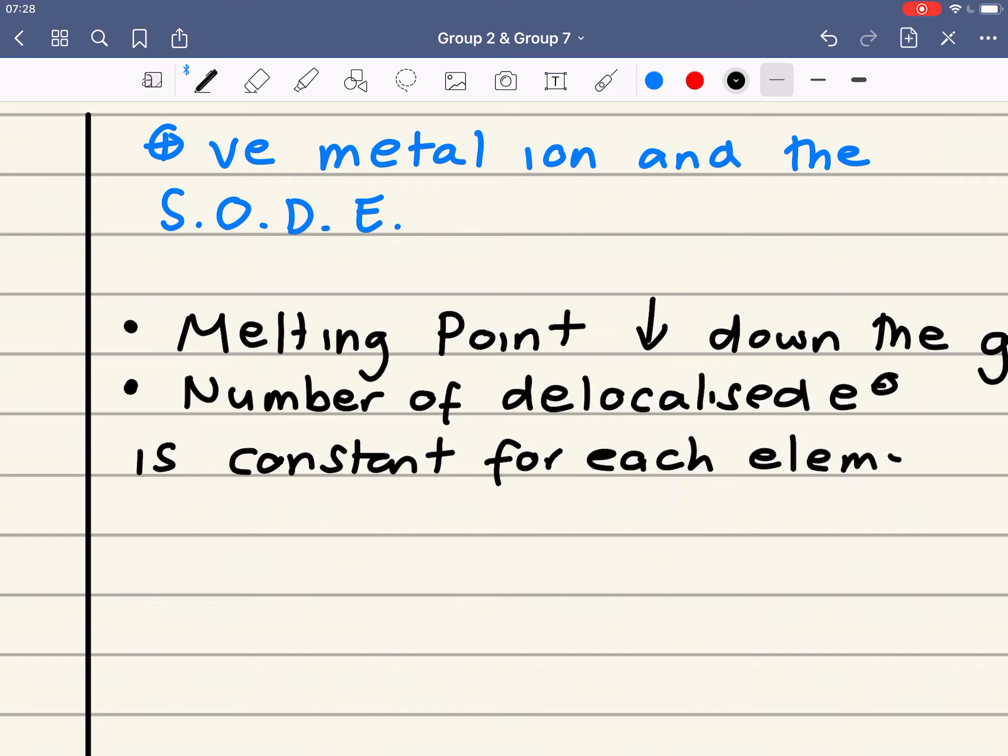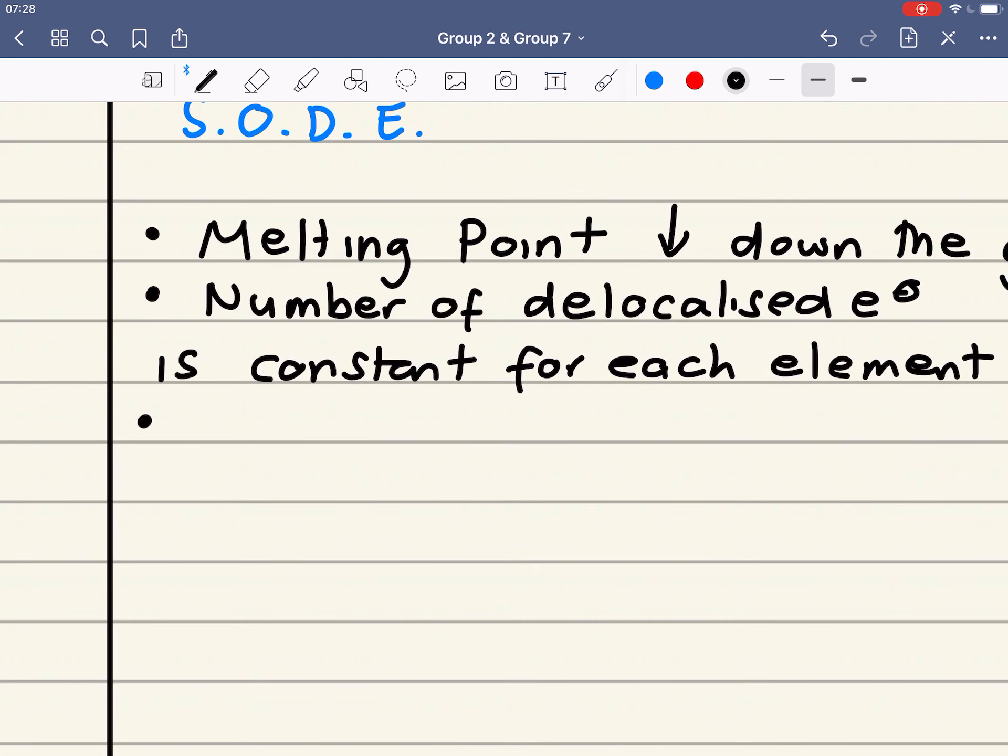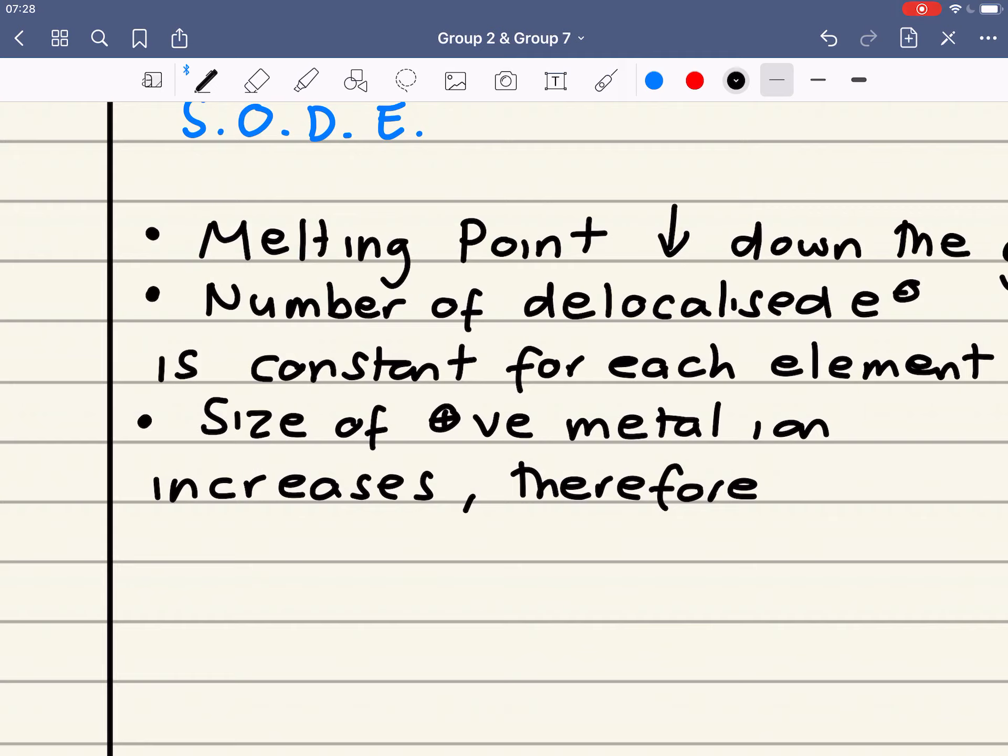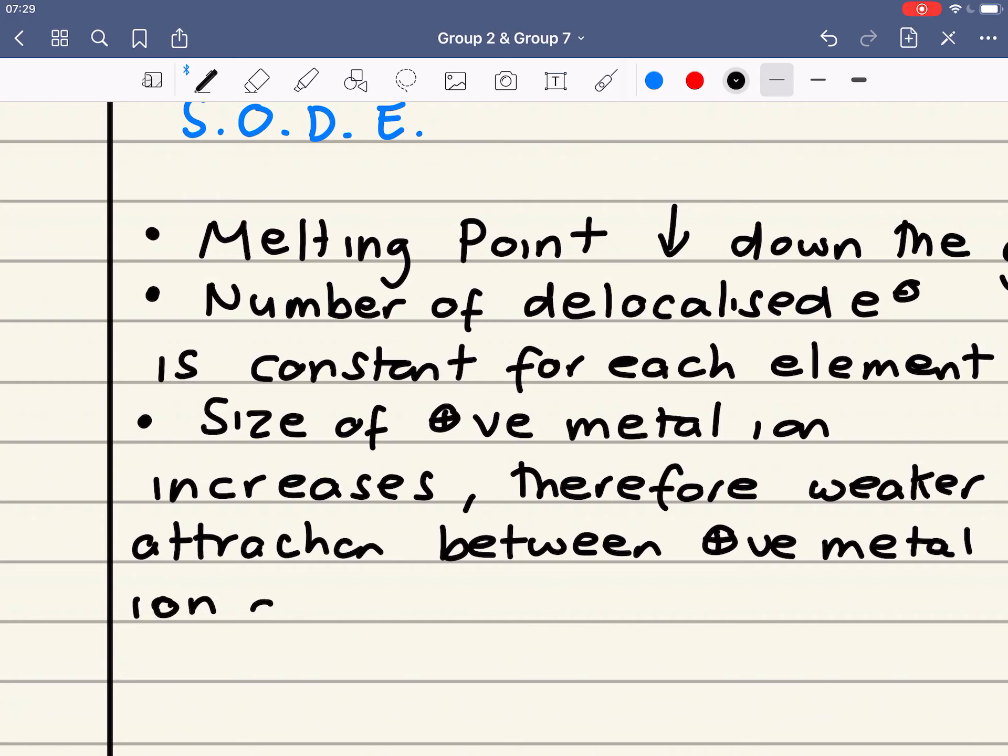But, as you go down the group, the size of the positive metal ion increases. Therefore, a weaker attraction between the positive metal ion, that's the nucleus of the positive metal ion, and the sea of delocalized electrons.